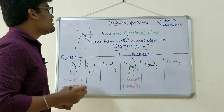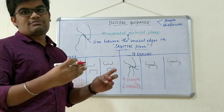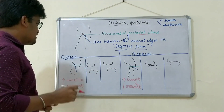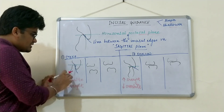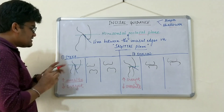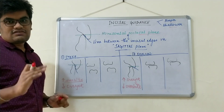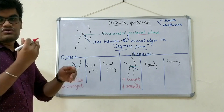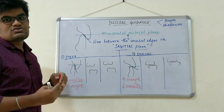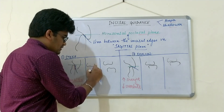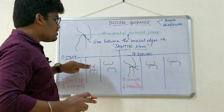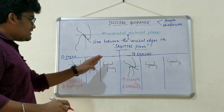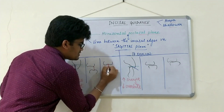Incisal guidance can be steeper or shallower, and this affects the separation of the posterior teeth. In the first figure, the incisal guidance is steeper due to an increased overbite — that is, excess vertical overlap of the incisors. Logically, when these cases protrude the jaw, the incisor has to cover a longer path to reach edge-to-edge position. This results in more posterior disclusion, giving us the scope to increase the cusp height of the posterior teeth while still maintaining disclusion.